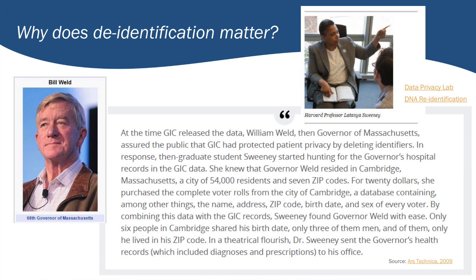So why does de-identification matter? We're going to go through a couple of famous cases where data was re-identified and the consequences it had. There's a case with one of the former governors of Massachusetts, Bill Weld. He had released some medical data for the purposes of research, and a savvy graduate student bought for something like $20 voter registration records, knew he was in this data set, and managed to back out his medical records. In a theatrical flourish, she identified who he was and sent his medical records to his office. They thought the records were anonymized, but his name, sex, and zip code were enough to identify him by linking with voter registration records.